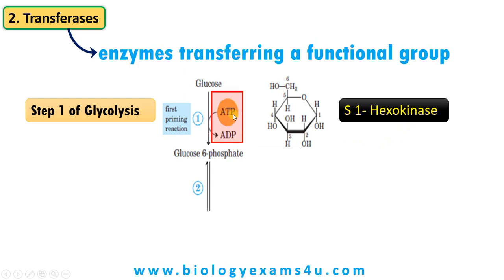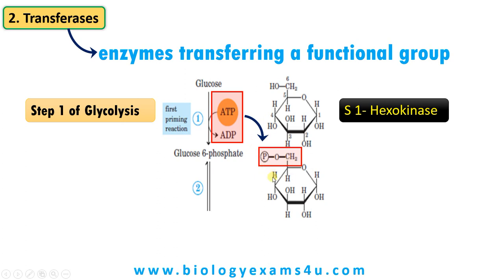ATP provides a phosphate to glucose, forming glucose 6-phosphate. The 6th position of glucose receives a phosphate from ATP, so ATP becomes ADP, and glucose becomes glucose 6-phosphate. A phosphate group is transferred from ATP to glucose forming glucose 6-phosphate. Therefore this enzyme comes under transferases, and the enzyme is called kinase — specifically hexokinase, since glucose is a hexose or 6-carbon molecule.